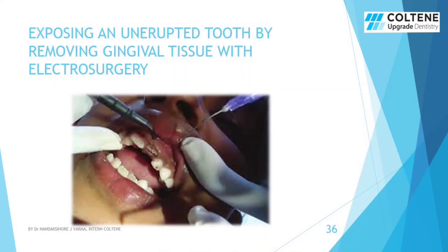We may have encountered pediatric cases with an unerupted tooth with gingiva blocking its eruption, where we plan to remove the surface gingiva. In such cases, after seeing the scalpel, the patient becomes uncooperative. In such cases, this electrosurgical unit is of great importance — like a pen, you can simply remove the tissue with minimal pain.